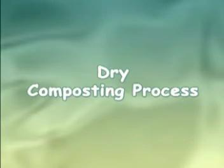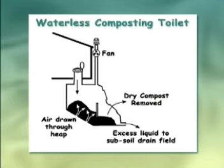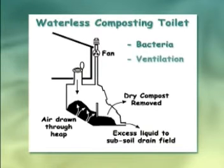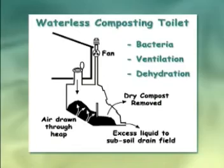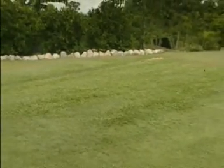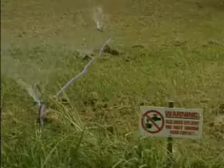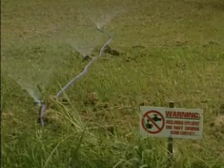The dry composting process uses natural processes such as bacteria, oxygen, ventilation and dehydration to break down the waste to a crumbly and odourless matter, with the separated liquid effluent draining to a land application area or through an aerated wastewater treatment system.